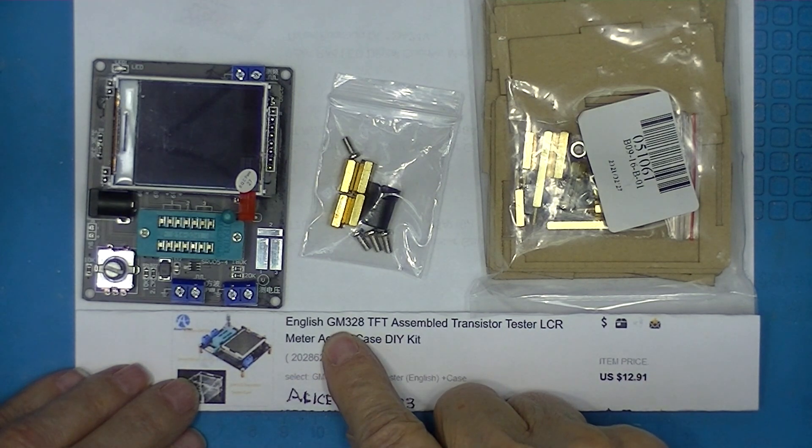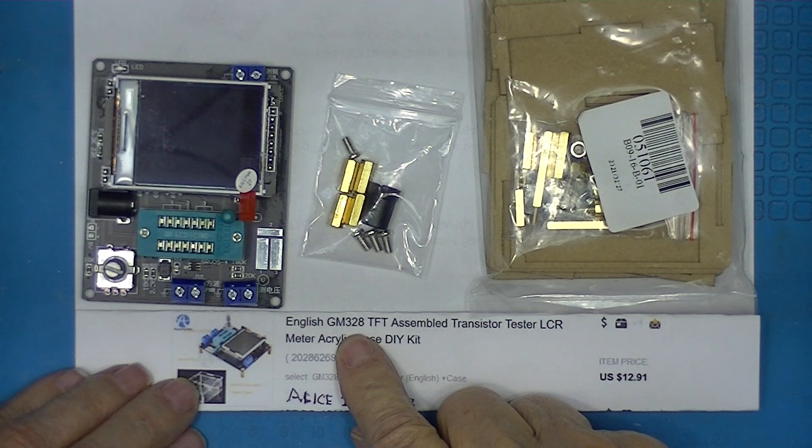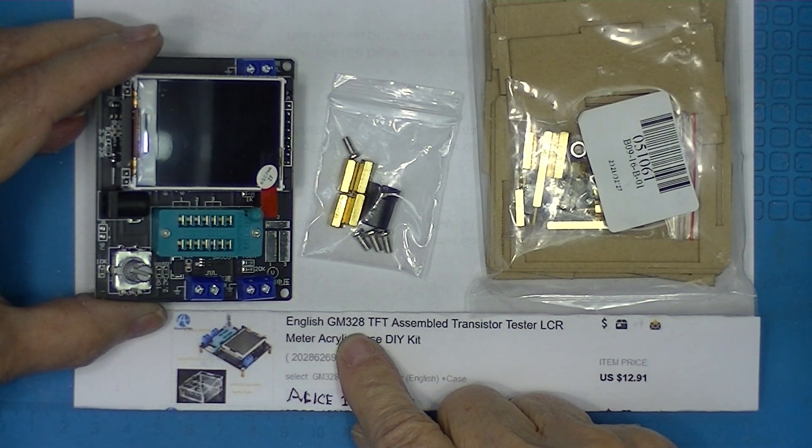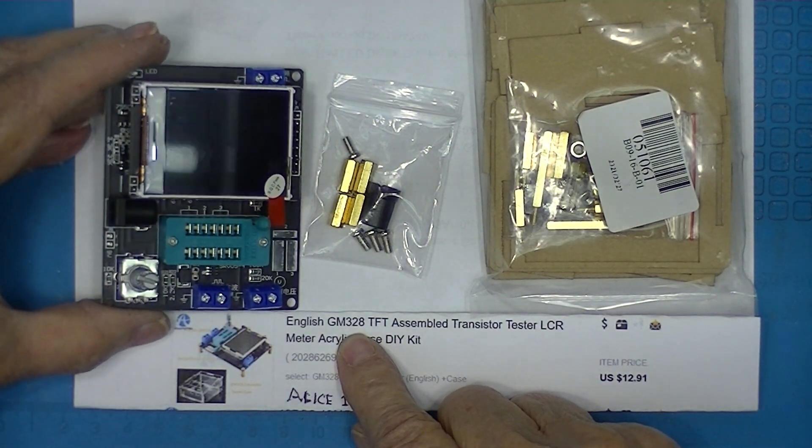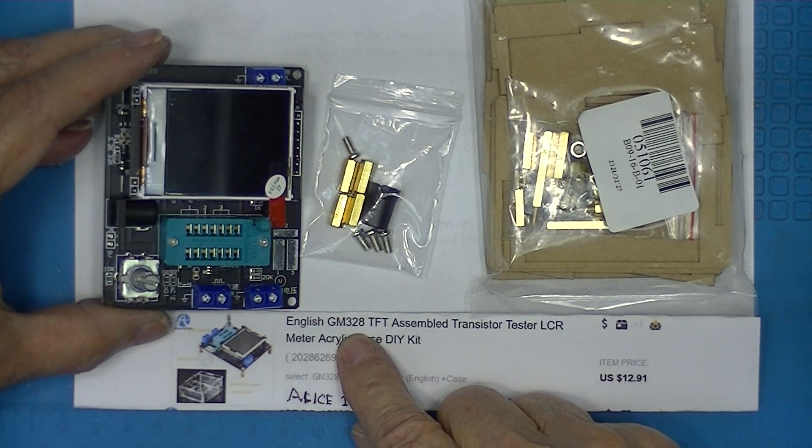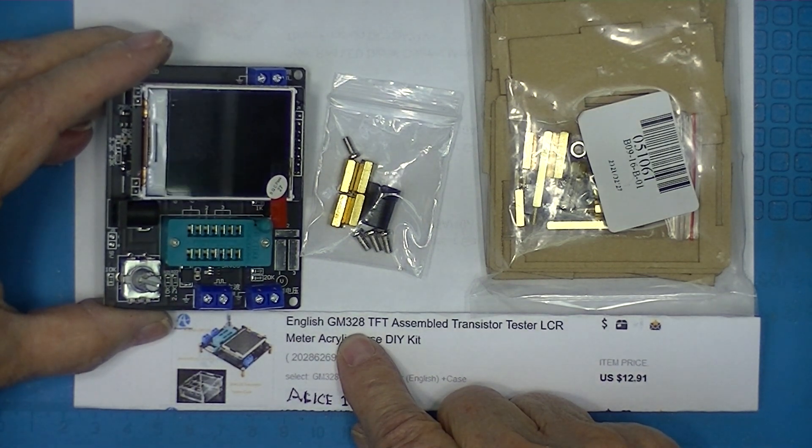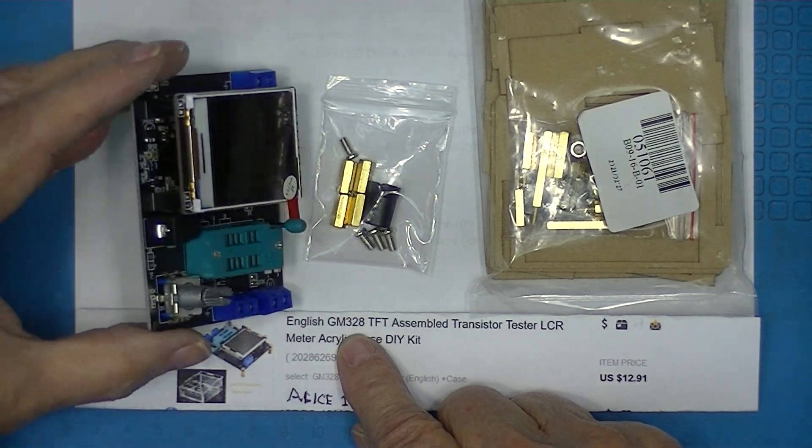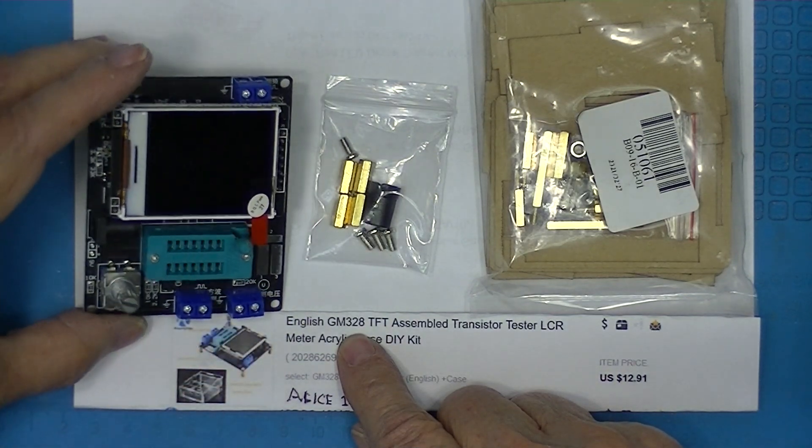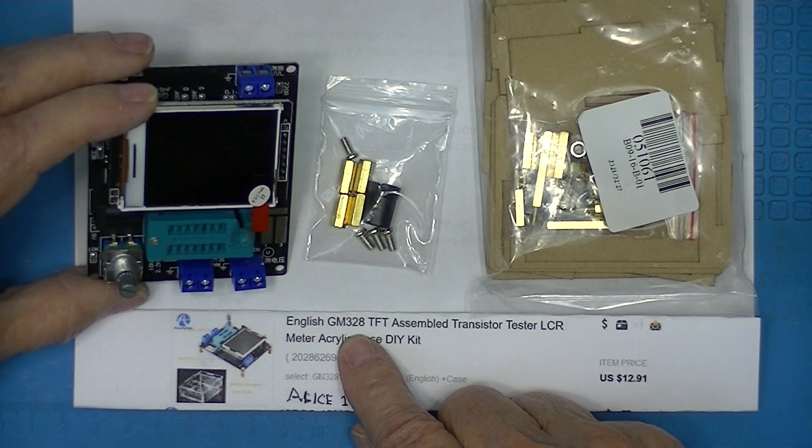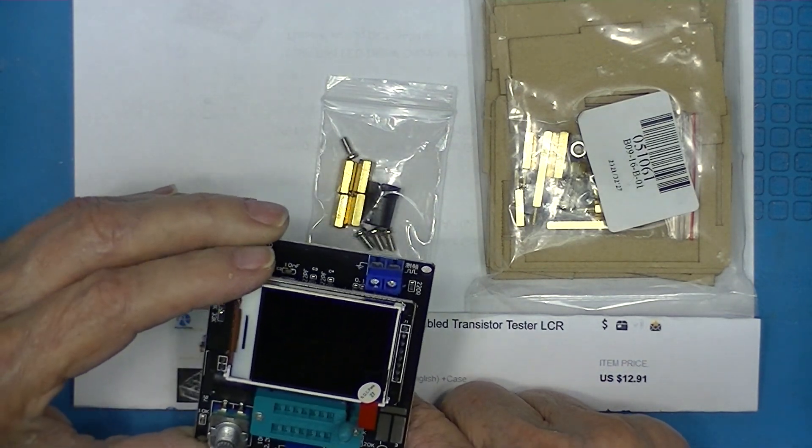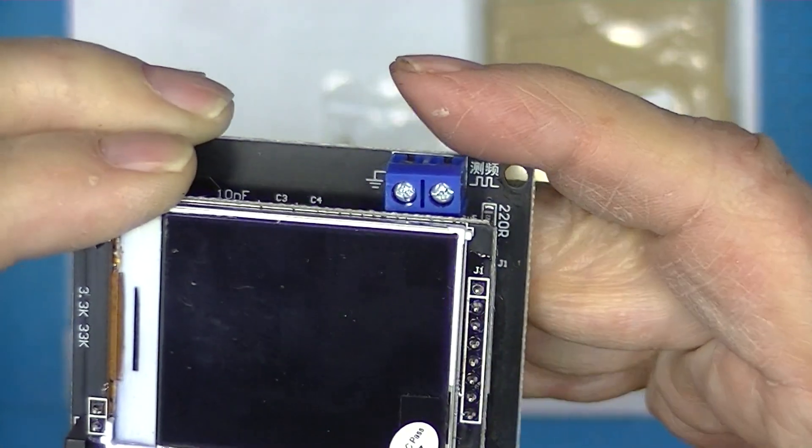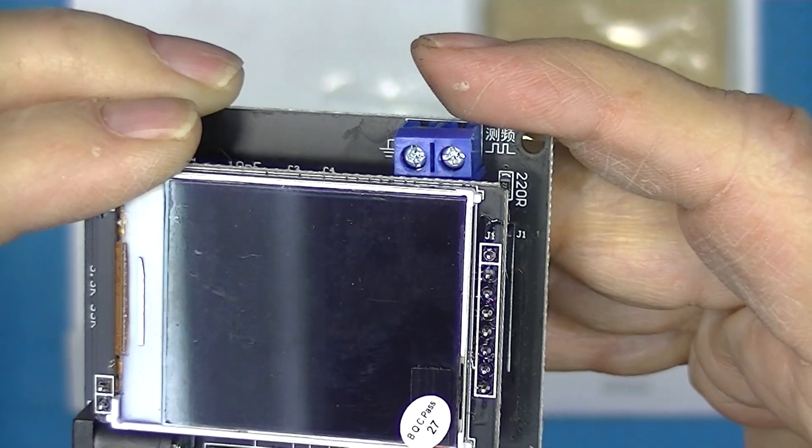I received this GM328 transistor tester, although it's capable of doing diodes, LEDs, all sorts of three terminal devices, capacitors, inductors, resistors. Depending on the setup screen, I believe it does do a TTL square wave output. This indicates it produces a square wave pulse.